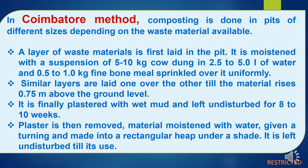Now we will discuss the Coimbatore method of composting, in which composting is done in pits of different sizes depending on the waste material available. A layer of waste material is first laid in the pit and moistened with a suspension of 5 to 10 kg of cow dung in 2.5 to 5 liters of water, and 0.5 to 1 kg of fine bone meal is sprinkled over it uniformly. Similar layers are laid one over the other until the material rises 0.75 meters above ground level. It is finally plastered with wet mud and left undisturbed for 8 to 10 weeks. The plaster is then removed, material moistened with water, given a turning, and made into a rectangular heap under a shed, where it is left undisturbed until use.